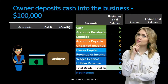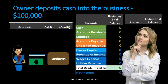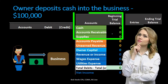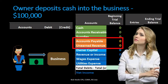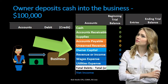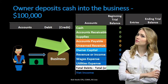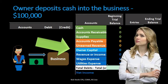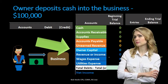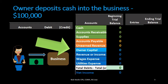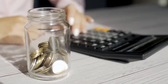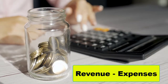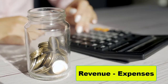Note the order of the trial balance: always in the order of assets (shown in green), liabilities (in orange), and then equity, revenue, and expenses — the income statement accounts — with net income at the bottom, calculated as revenue minus expenses.